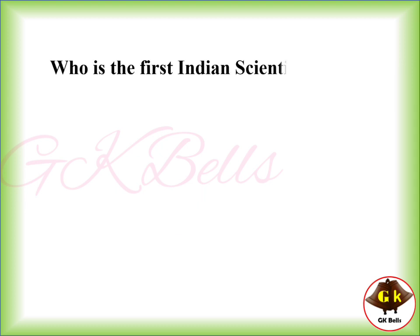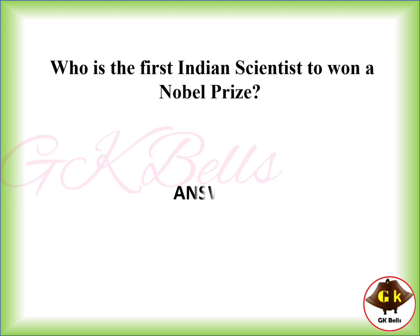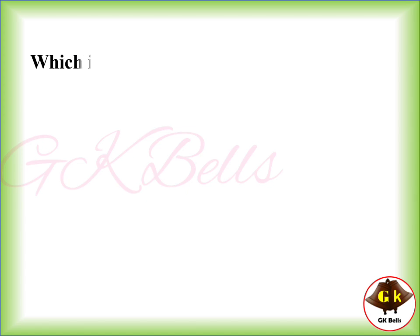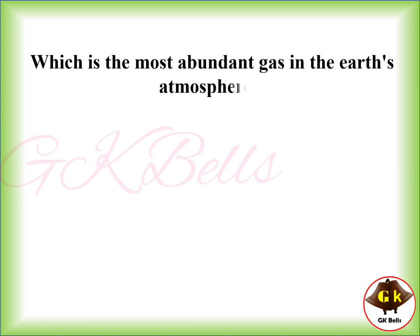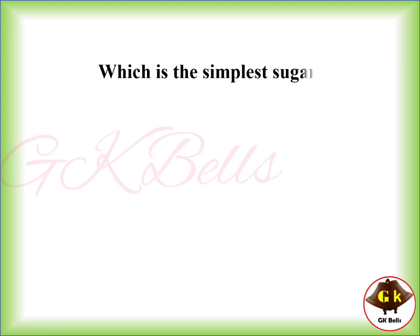Who is the first Indian scientist to win a Nobel Prize? CV Raman. Which is the most abundant gas in the Earth's atmosphere? Nitrogen. Which is the simplest sugar? Glucose.